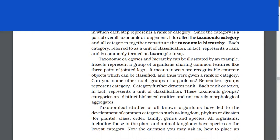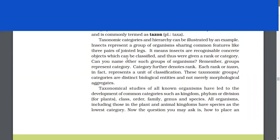Taxonomic categories and hierarchy can be illustrated by an example. Insects represent a group of organisms sharing common features like three pairs of jointed legs. It means insects are recognizable concrete objects which can be classified. Can you name other such groups of organisms? Remember, groups represent category. Category further denotes rank. Each rank or taxon represents a unit of classification.